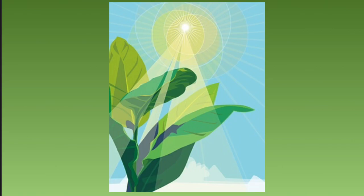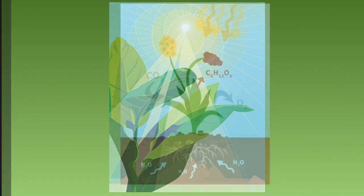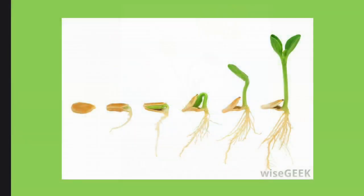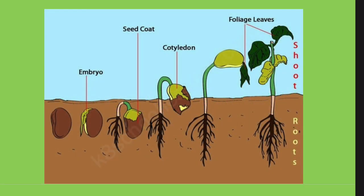Plants normally have leaves, absorb sunlight, and photosynthesize — this is how they make the food they need to grow. But the early embryo doesn't have any leaves and so cannot do photosynthesis; therefore it requires a food store. The seed coat is around the embryo because its job is to protect the embryo.